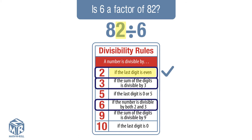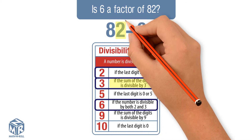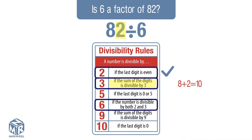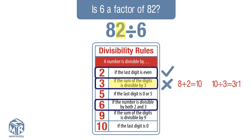Let's check if 82 is divisible by 3. A number is divisible by 3 if the sum of the digits is divisible by 3. 8 plus 2 equals 10. 10 is not divisible by 3 without a remainder, so 82 is not divisible by 3. Therefore, 82 is not divisible by 6, and 6 is not a factor of 82 because we can't divide 82 by 6 without a remainder.